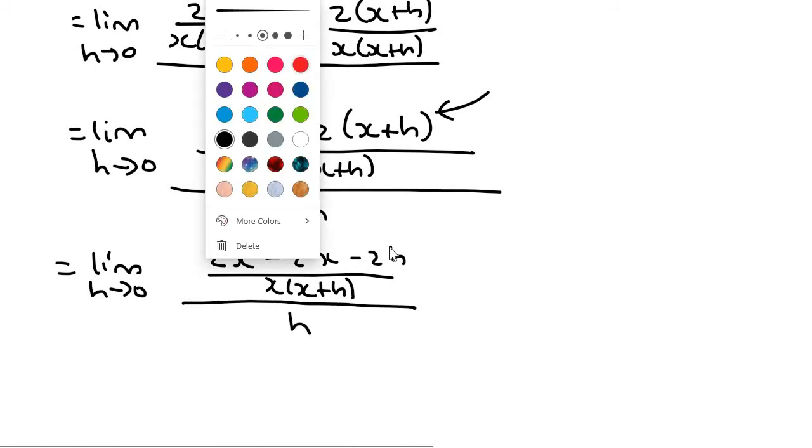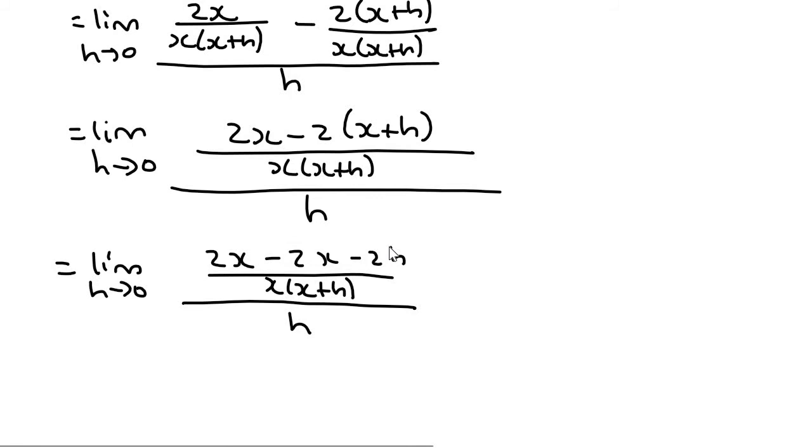What you do now is you simplify. So this part over here, we can see that these two x's would cancel. And so we can say we're left with minus 2h over there, over x, x plus h, all over h.